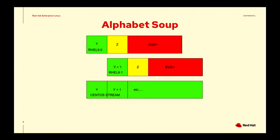Z-stream contains our updates for that particular OS release — security fixes, occasional features, bug fixes. That's what happens in Z-stream. We extend the development beyond that Z-stream window, which lasts six months to the next minor release, and we have something called EUS.